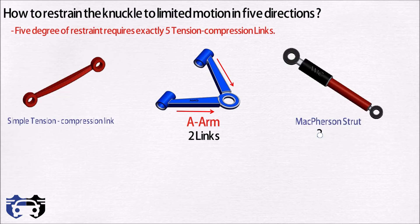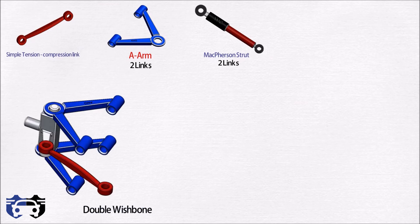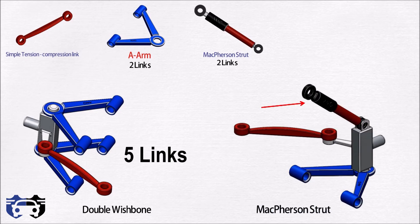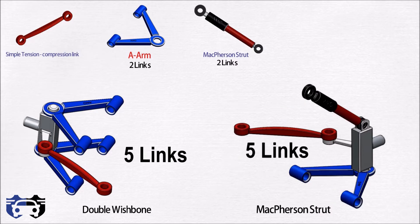Now if you see a double wishbone geometry, here we are having two A-arms which equals four links and one tie rod that equals one link, so in total we are having five links. Similarly in McPherson strut we are having one strut which equals two links, one A-arm that equals two links, and one tie rod which equals one link, so in total we are having five links.